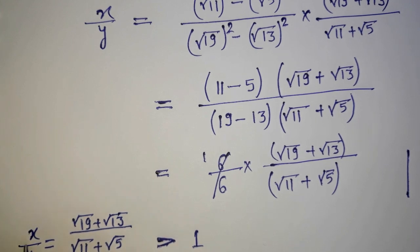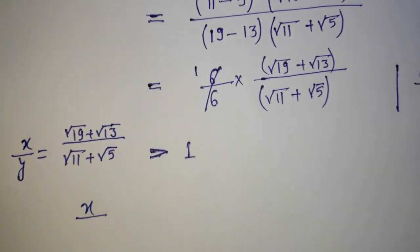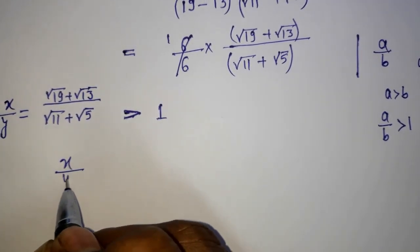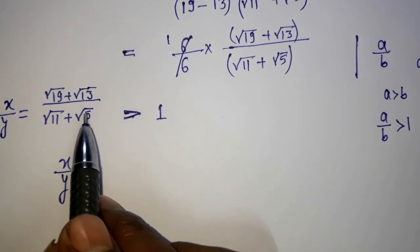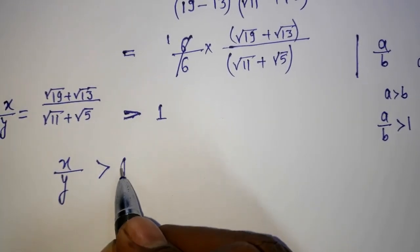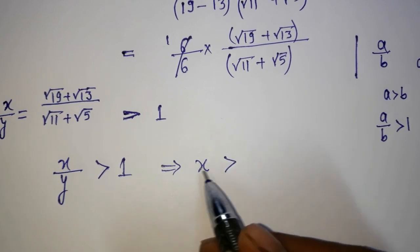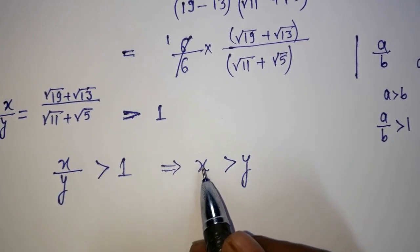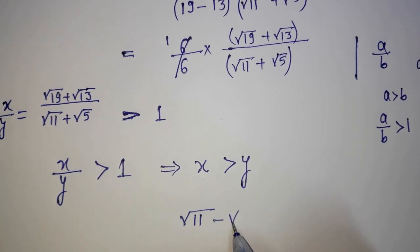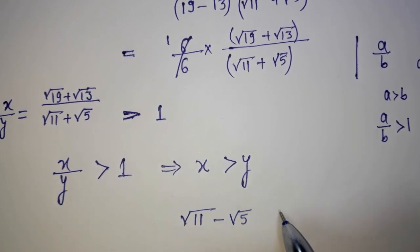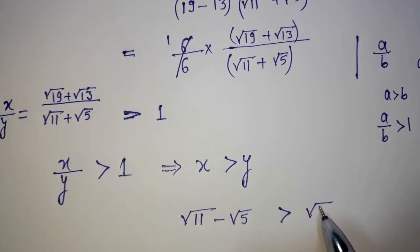We said that if a divided by b is greater than 1, this implies that a is greater than b. And we have considered x as root 11 minus root 5, which is going to be greater than y.